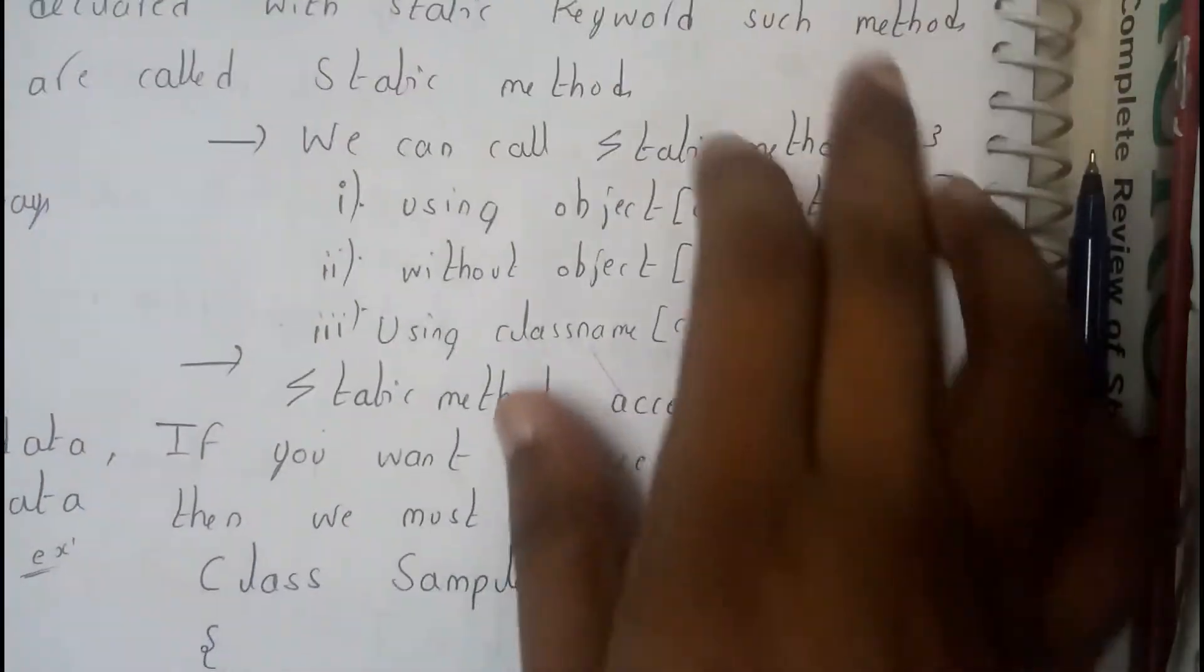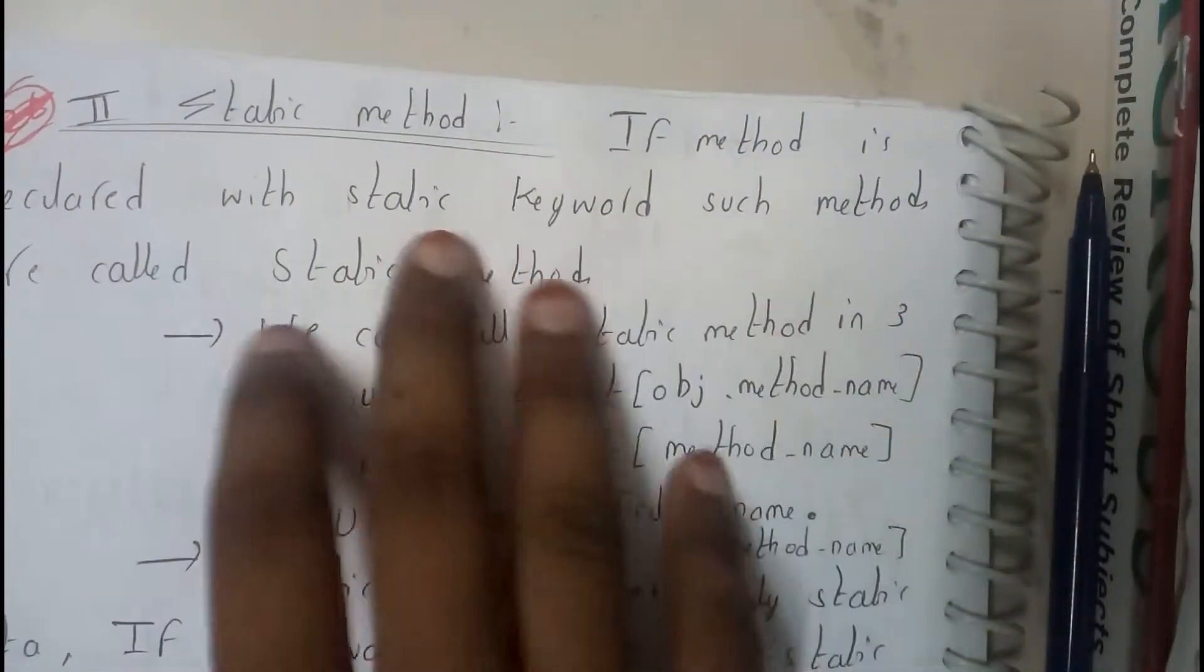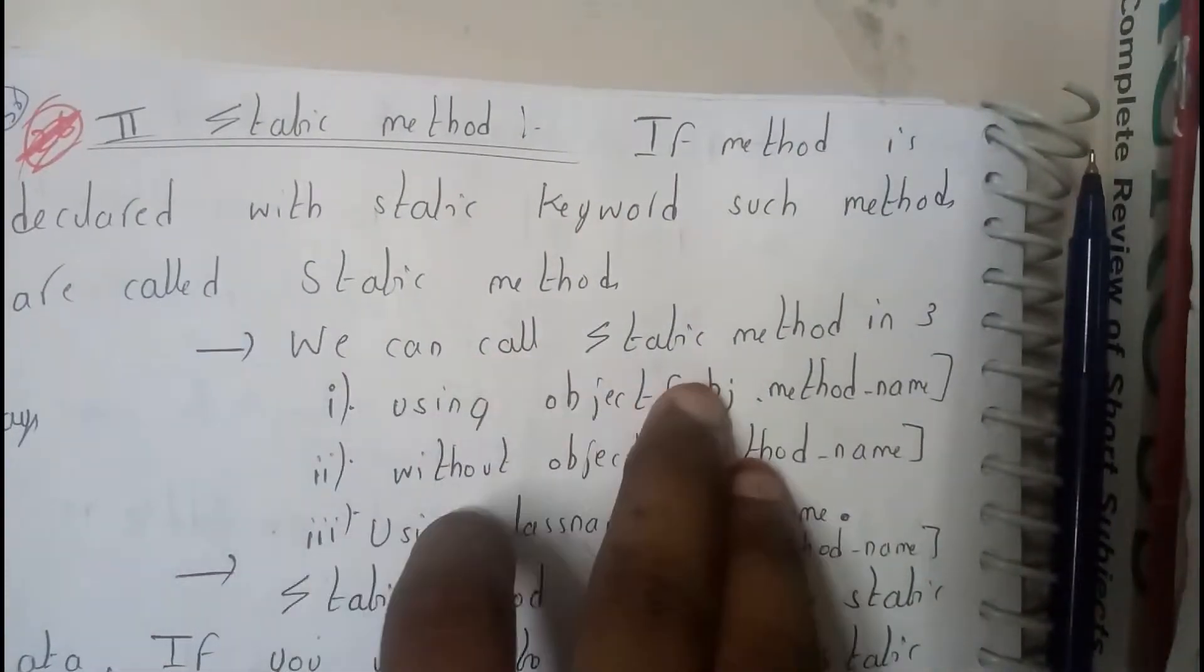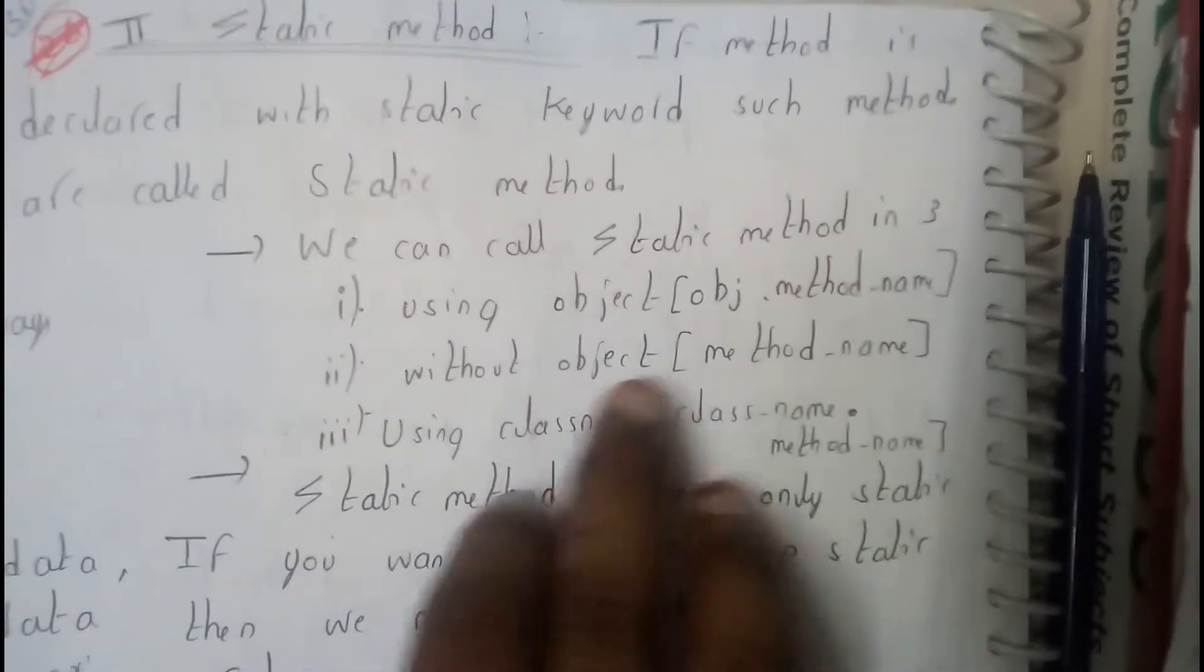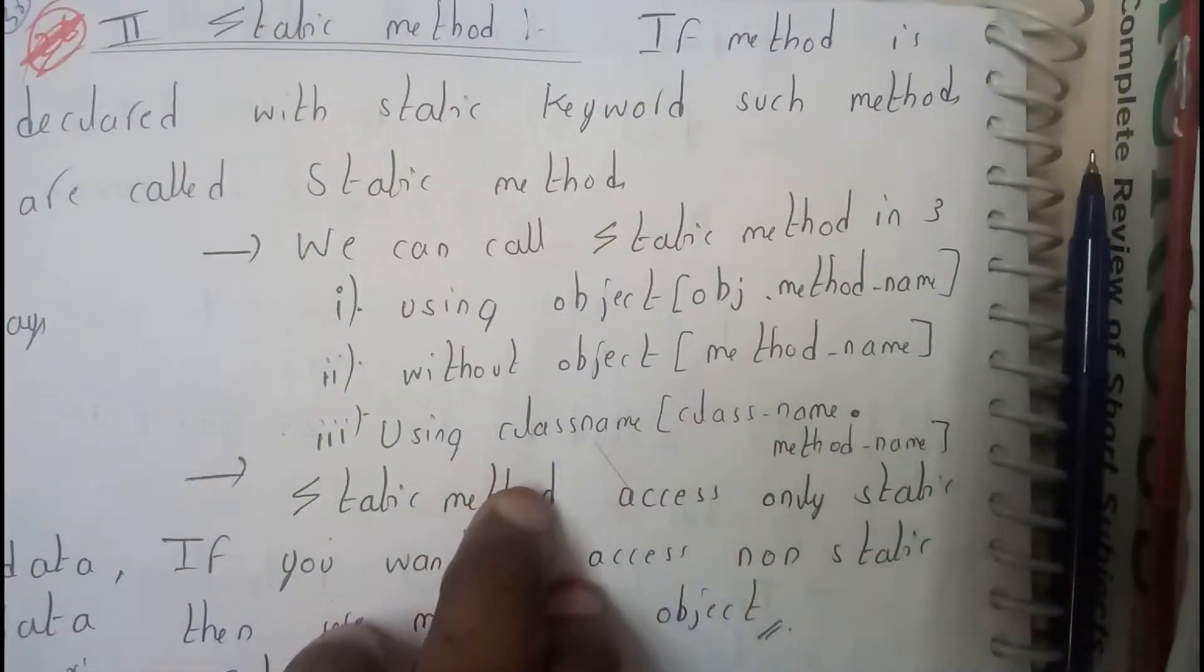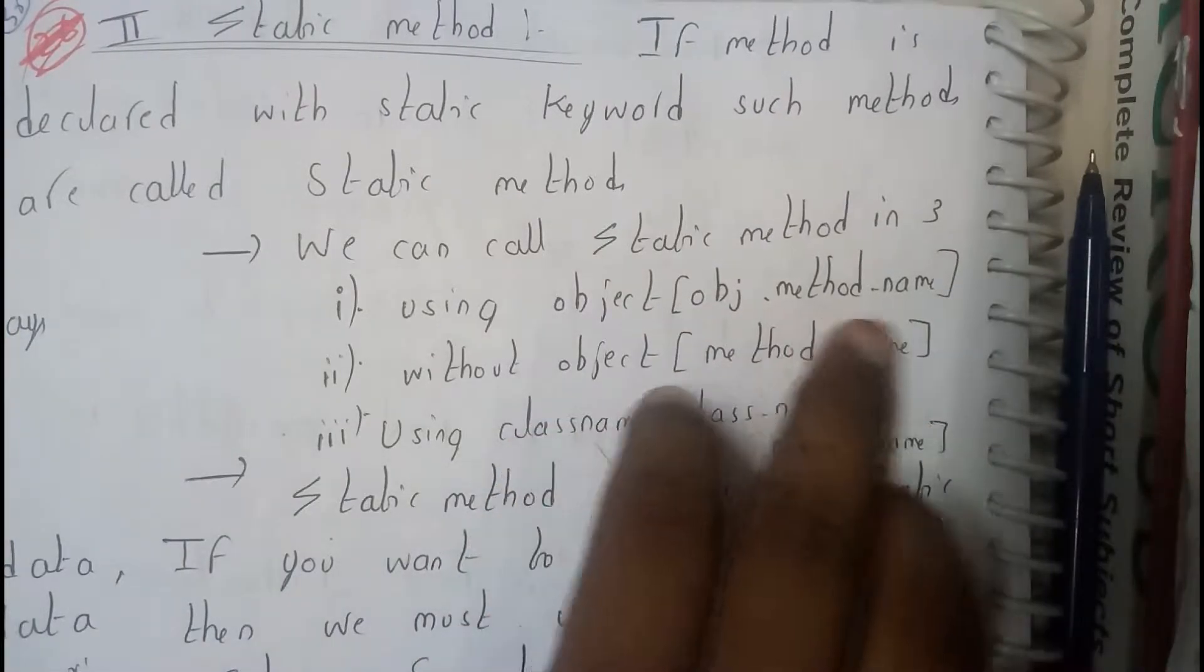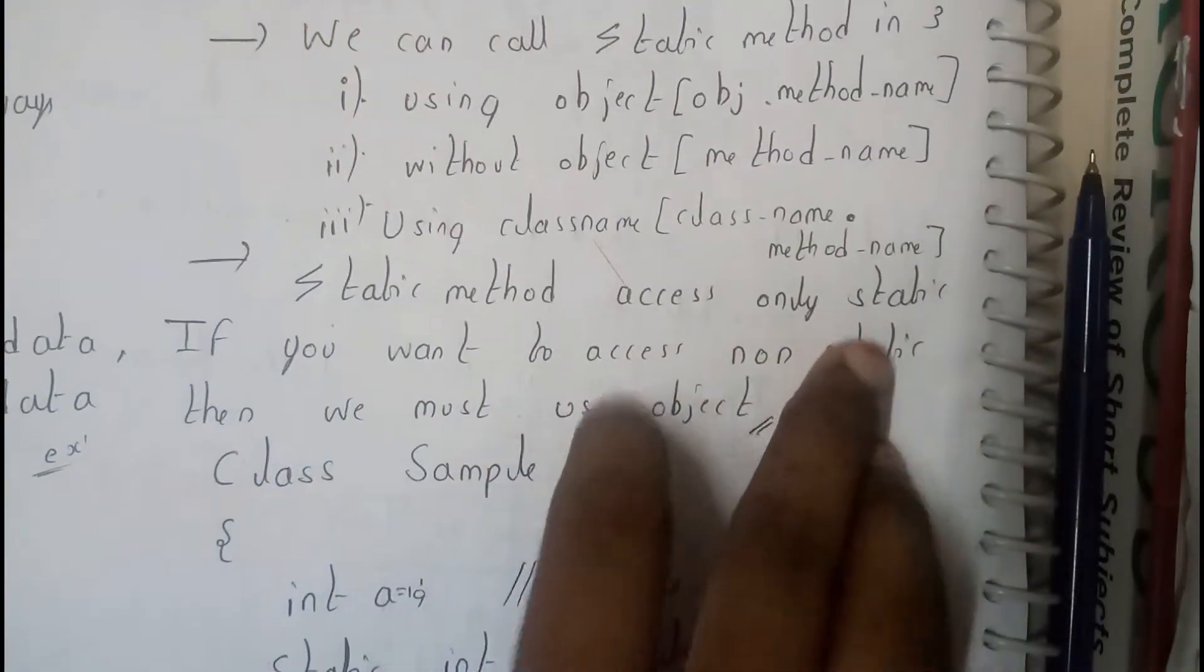Moving on to static method. If a method is declared with static keyword, such methods are called static methods. We call them in three different ways: using object, directly the method name, and using the class name directly. The formats are object.method name, method name, or class name.method name.